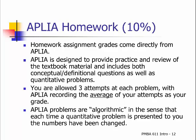Graded homework problems are in Aplia and they count for 10% of your grade. The problems mirror and sometimes extend the material in the text. Quantitative problems are algorithmic — the numbers change with each attempt. You may attempt each question three times, with the system recording your average score under a system called Do No Harm. If you attempt a problem a second or third time, your score will only be averaged in if it doesn't lower your average.